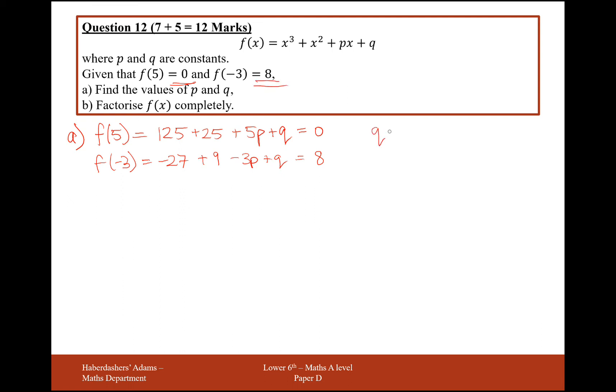So what I'll do with both of these, I'll make q the subject and set the equations equal to each other. So take away the 5p onto the other side, take away 150 onto the other side, and we're going to get minus 26 and plus 3p. So setting the two things equal to each other, minus 5p minus 150 equals 3p minus 26.